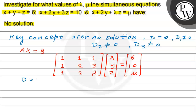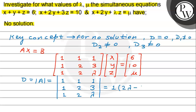Expanding the determinant D along the first row: 1 times (2·lambda minus 6), minus 1 times (lambda minus 3), plus 1 times (2 minus 2). This simplifies to 2·lambda minus 6 minus lambda plus 3, giving lambda minus 3. So D equals 0 when lambda equals 3.